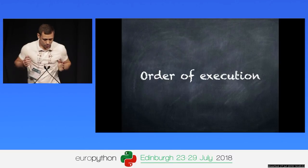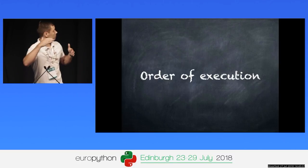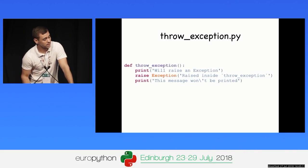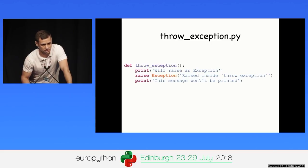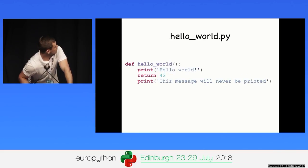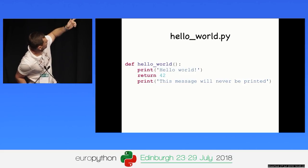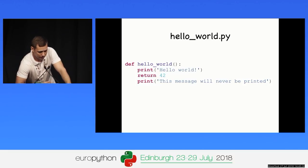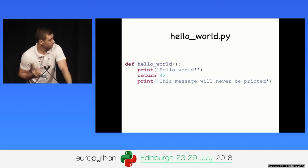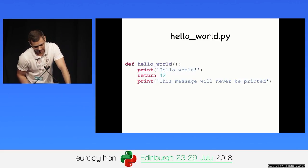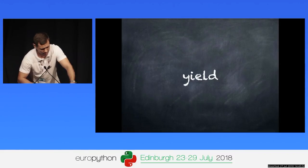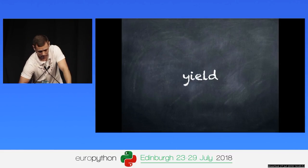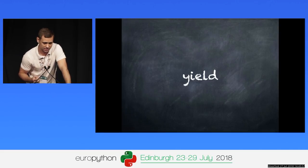Order of execution: as we already said, each line executes from top to bottom in order. Until an exception is raised — for example, in this example, the message after the raise will never be executed. Another way to end the function's execution is when a return statement is reached — the print message below return will never be executed. Return implies that the function is returning control back to the point from where it was initially called.